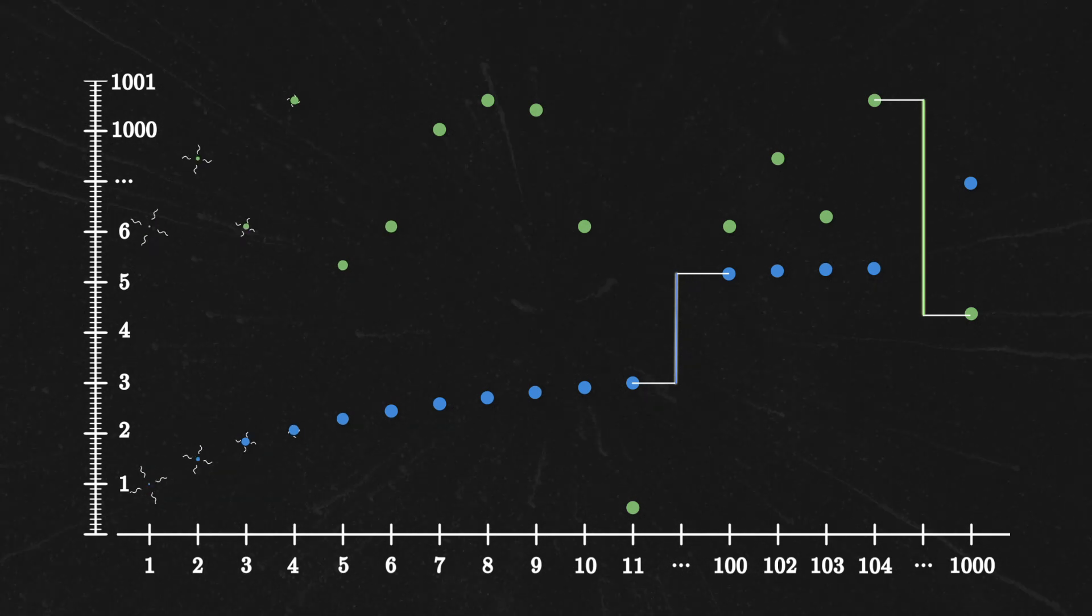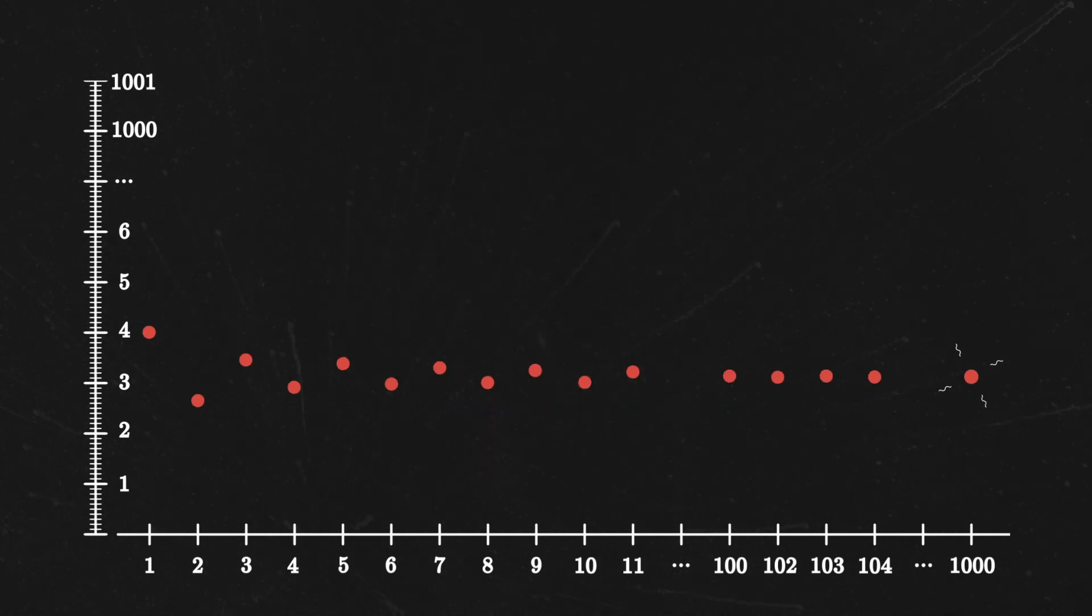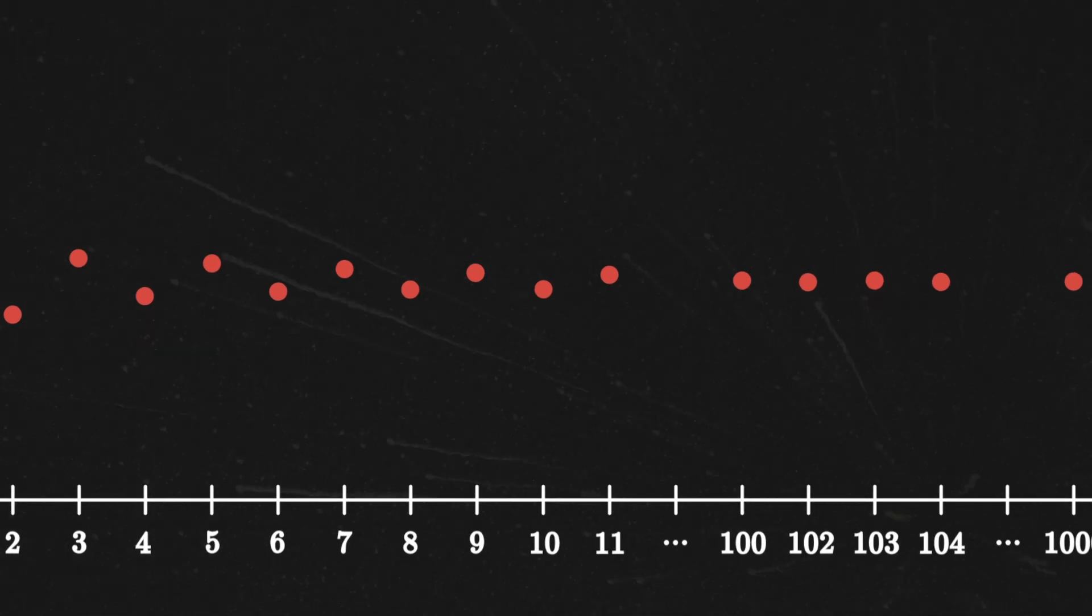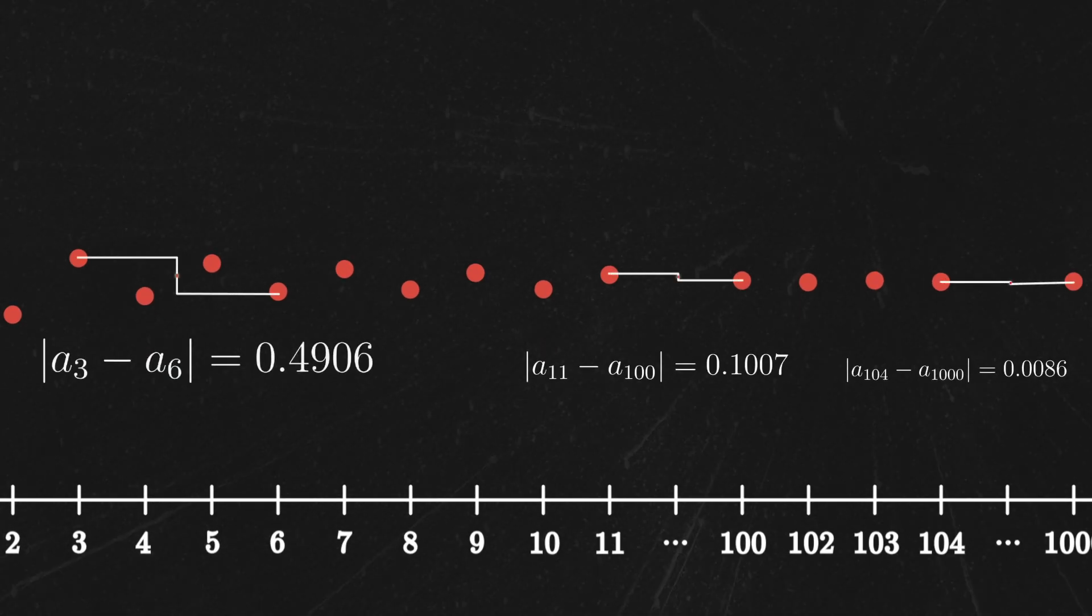Meanwhile, if we look at the red sequence, its points get closer and closer to each other, not just some particular point. This is actually a great observation because this is a property intrinsic to the sequence and doesn't refer to some yet-to-be-defined number that it seems to tend towards.